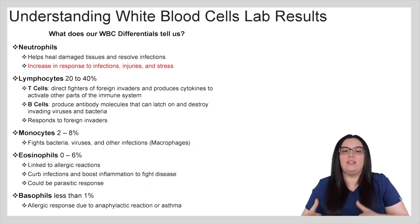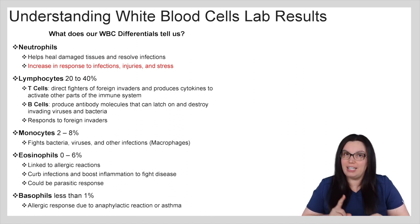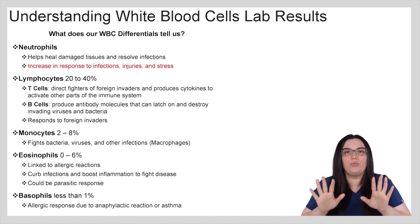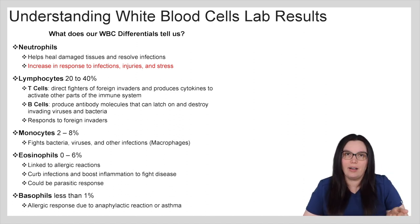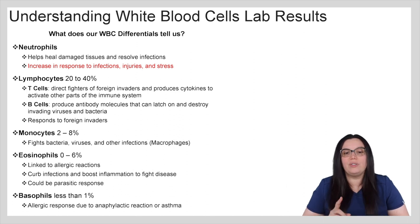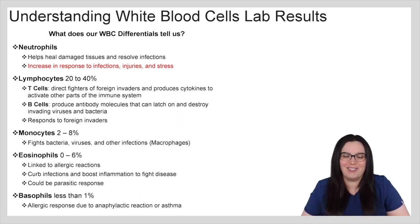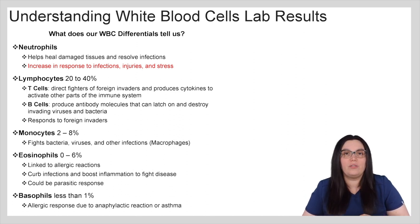What does our white blood cell differential tell us? Neutrophils help heal damaged tissues and resolve infections — they increase in response to infections, injury, and stress. When it comes to our lymphocytes, they're broken down into two categories: T cells and B cells. T cells are direct fighters of foreign invaders and produce cytokines to activate other parts of the immune system. B cells produce antibody molecules that latch on and destroy invading viruses and bacteria. Monocytes help us fight bacteria, viruses, and other infections through macrophages.